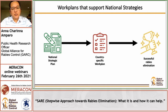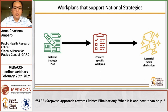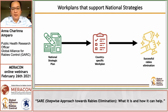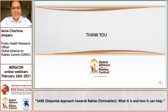In order for rabies elimination to be successful, we need to plan. And for that plan to be successful, we need to break down our actions into manageable steps. The SARA tool does just that by helping us develop a clear, well-defined national strategy and by helping us identify which activities to prioritize and how to scale up and progress from there. Thank you.